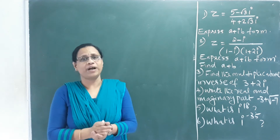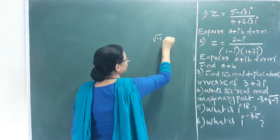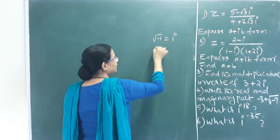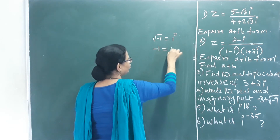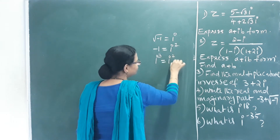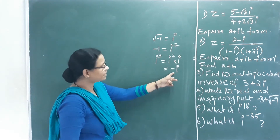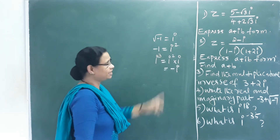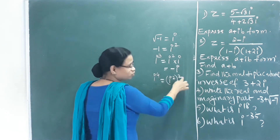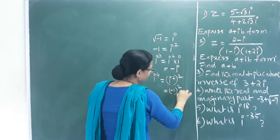The next topic is powers of i. We know √(-1) = i. So i¹ = i, i² = -1, i³ = i² × i = -1 × i = -i, and i⁴ = (i²)² = (-1)² = 1.